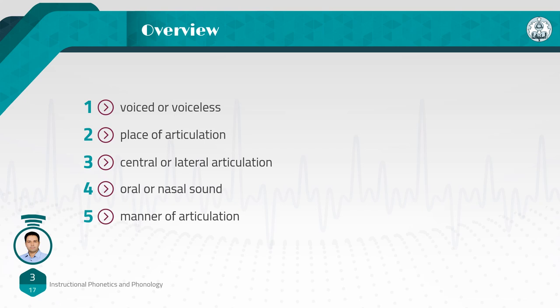We also introduced approximant as another manner of articulation, like 'w' or 'y.' These are approximants, and lateral approximant like 'l' was also introduced. We talked about additional consonant gestures like trill as in Peruvian 'r' or 'r' in Farsi, or tap or flap as in 'pity,' and also affricates like 'ch' or 'j,' or glottal stops — like when we say 'uh-oh' or when we say 'Batman,' we have a glottal stop.